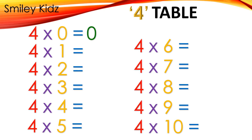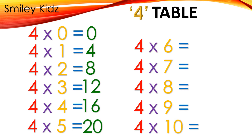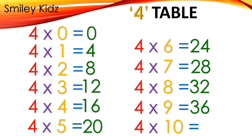Table 4: 4×0=0, 4×1=4, 4×2=8, 4×3=12, 4×4=16, 4×5=20, 4×6=24, 4×7=28, 4×8=32, 4×9=36, 4×10=40.